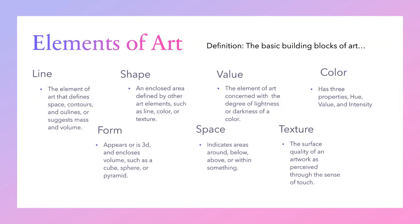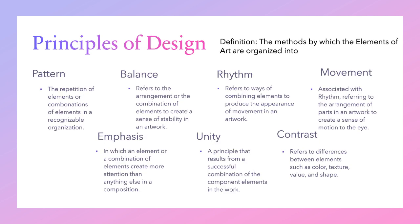Elements of art are the basic building blocks of art. There are seven: line, shape, value, color, form, space, and texture. Principles of design are the methods by which the elements of art are organized into a unified whole — they tell you whether you've put things down on paper in a good way. The seven principles are pattern, balance, rhythm, movement, emphasis, unity, and contrast. You may or may not need those smaller definitions, so pause if needed.